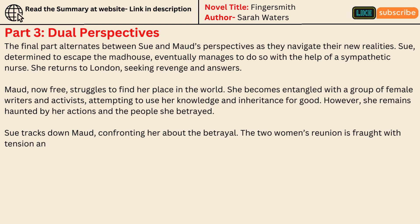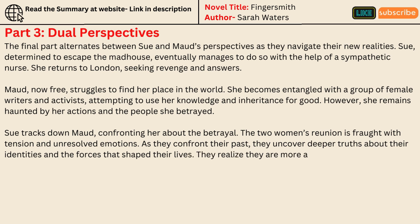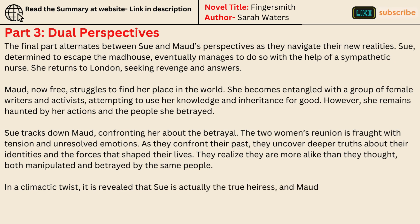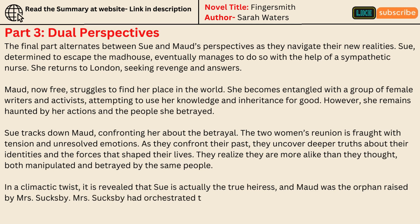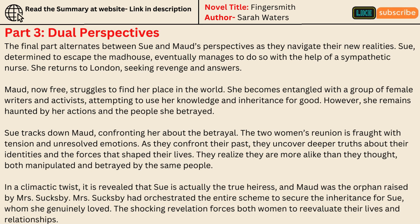The two women's reunion is fraught with tension and unresolved emotions. As they confront their past, they uncover deeper truths about their identities and the forces that shaped their lives. They realize they are more alike than they thought — both manipulated and betrayed by the same people. In a climactic twist, it is revealed that Sue was actually the true heiress, and Maude was the orphan raised by Mrs. Sucksby. Mrs. Sucksby had orchestrated the entire scheme to secure the inheritance for Sue, whom she genuinely loved. The shocking revelation forces both women to re-evaluate their lives and relationships.